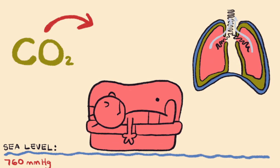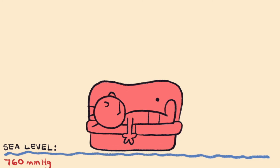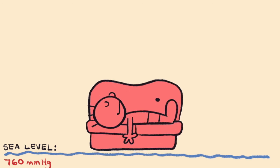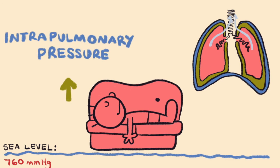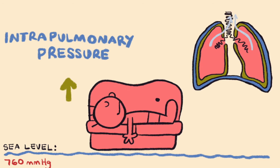If you were to forcefully contract your internal intercostal muscles — let's say during a heavy sigh, or if someone pushes on your chest while you lay on the couch — then the intrapulmonary pressure will rise even higher than 760 mmHg, and even more air will be expired from your lungs.